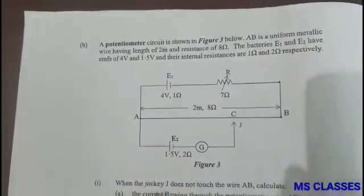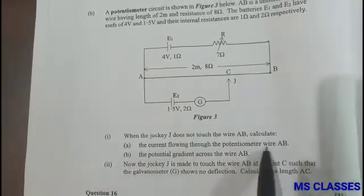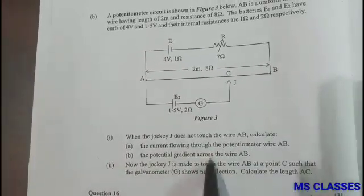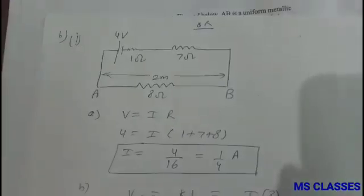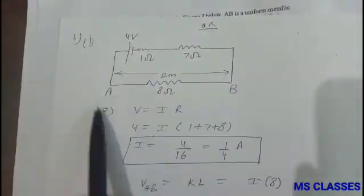In an option this question is given: First, when the jockey J does not touch the wire AB, calculate the current through AB and the potential gradient across AB. So this is the first case when the jockey is not touching, so we can omit that circuit.